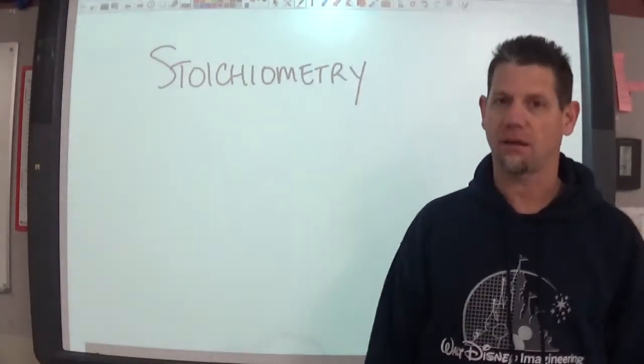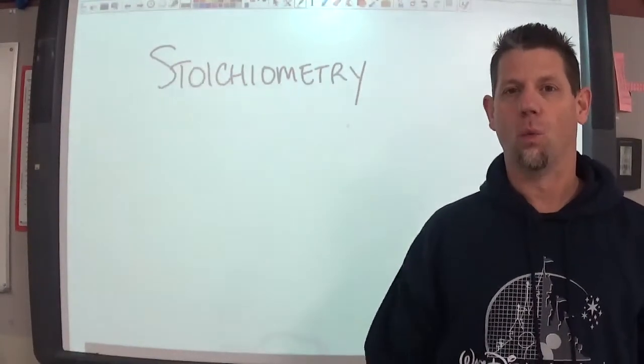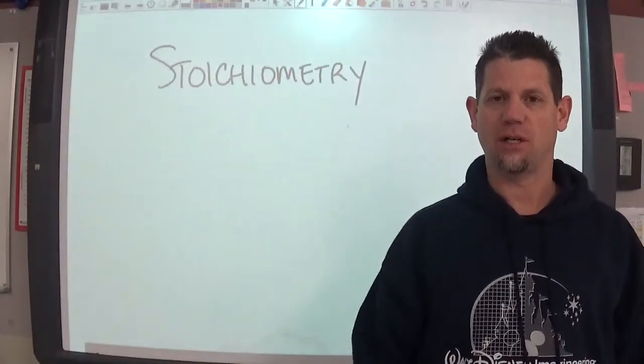But what if I had two moles of bread and three moles of turkey and one mole of cheese? That's a lot of bread and meat and cheese. And now I can make one mole of sandwiches. It is a ratio.